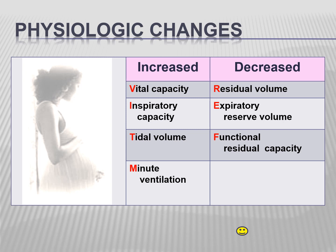Physiologic changes: vital capacity and inspiratory capacity increase by approximately 20% by late pregnancy. Expiratory reserve volume decreases from 1,300 ml to approximately 1,100 ml. Tidal volume increases approximately 40% as a result of respiratory stimulation by progesterone. Minute ventilation increases as much as 30 to 40% due to increased tidal volume.